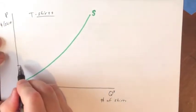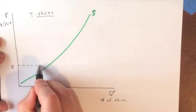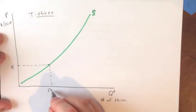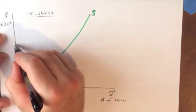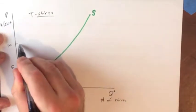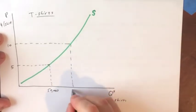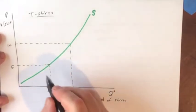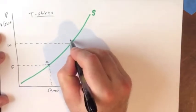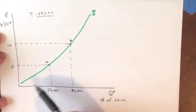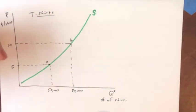If we're talking about something like t-shirts, then the price, the number of dollars per shirt, and quantity supplied would be the number of shirts. So let's say t-shirts are five dollars. How many will be produced? Let's say it's 50,000. Versus if it's ten dollars, how many shirts will be produced? Let's say it's 80,000.